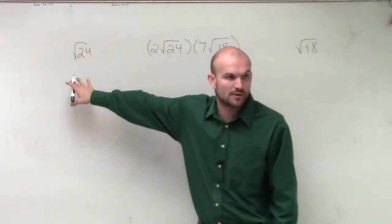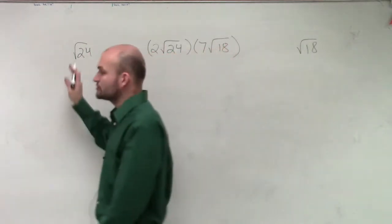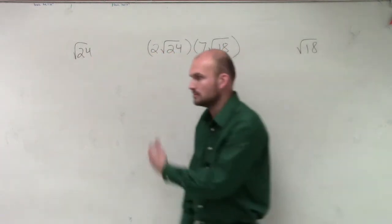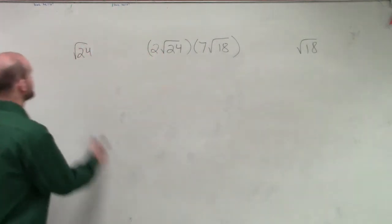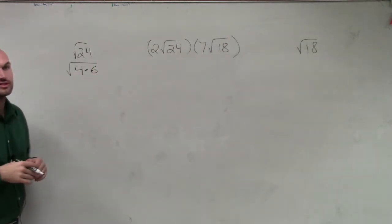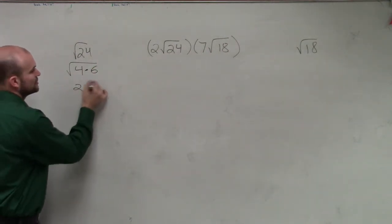Remember, if you can't take the square root of the number, you want to see if you can rewrite it as a product of that. So I think of what is the largest square number that divides into 24? Square number, number you can take the square root of, 4. I can rewrite this as square root of 4 times 6 using my product rule. So therefore, this answer is 2 radical 6.